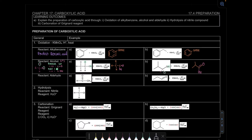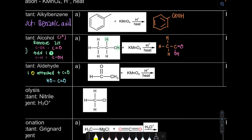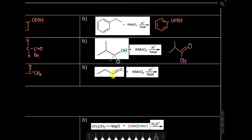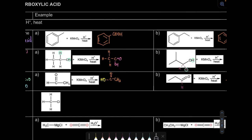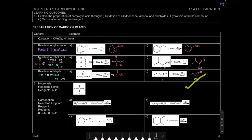Next is oxidation of an aldehyde — this is actually the easiest one. What we're going to do is add one oxygen to the hydrogen on the C double bond O. So that H becomes OH, giving us a carboxylic acid. For the skeletal formula, the carbon has only three bonds shown, so the double bond O stays, and we add one oxygen before our hydrogen. That's for the case of aldehyde oxidation.